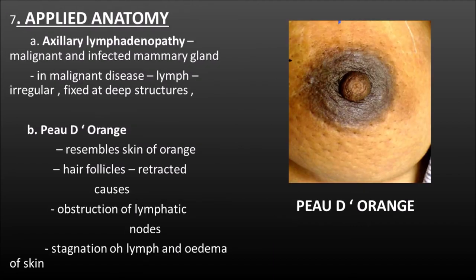Let us move on to the last section of the essay which is the applied anatomy. In breast abscess, the incision is taken radially to avoid damage to the lactiferous duct. Applied anatomy of lymphatics includes axillary lymphadenopathy which is frequently due to infection and malignant disease of the mammary gland. In malignant disease, the lymph node is hard, irregular and fixed to the deeper structures. The most important condition is peau d'orange, where the hair follicles over the lump appear to be retracted, caused by obstruction of the cutaneous lymphatics with stagnation of lymph and oedema of the skin around the hair follicles. This resembles the skin of an orange, and towards your right you can see how the condition of peau d'orange looks.